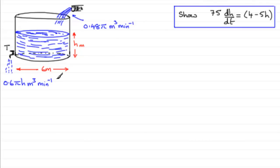And what we've got to do is show that t minutes after the tap's been open, that this differential equation holds: 75 times dh/dt equals 4 minus 5h.